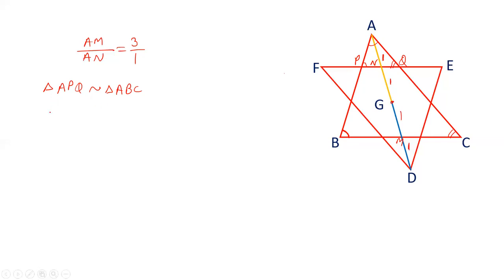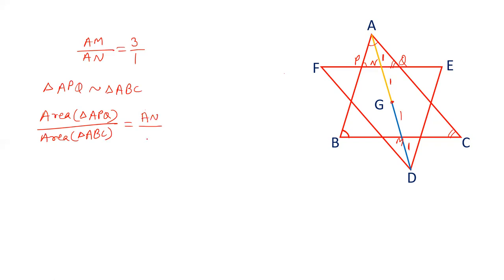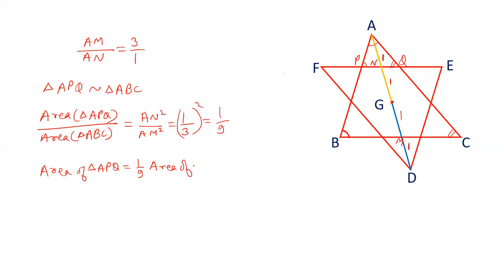If the triangles are similar, their areas are in the ratio of the square of their corresponding sides. Interestingly, their areas are also in the ratio of the square of their corresponding medians. Here the medians are AN and AM, and we know that AN and AM are in the ratio 1:3. So 1/3 squared equals 1/9. We can say that the area of triangle APQ is 1/9th of the area of triangle ABC.